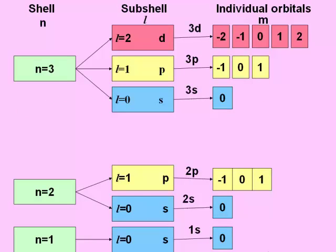Previously, we have seen that electron shells are divided into subshells, which are further divided into individual orbitals. Each individual orbital can hold up to two electrons. To determine the correct electronic configuration of an atom, we must know how to fill electrons in each orbital. We have already seen how Pauli's exclusion principle and Hund's rule can be applied. We must also determine in which order these subshells will be filled with electrons.